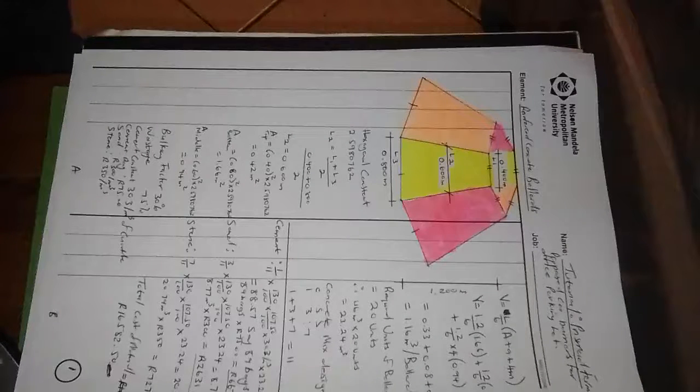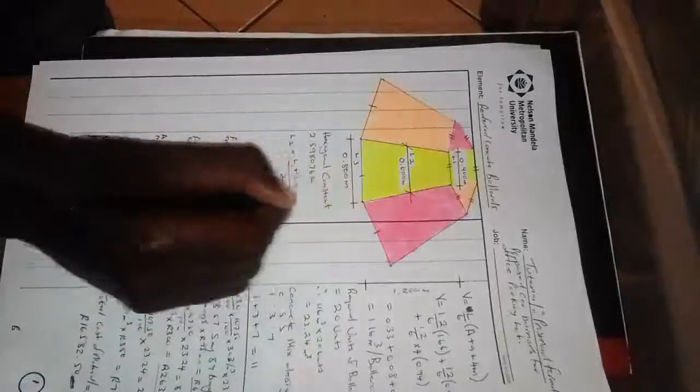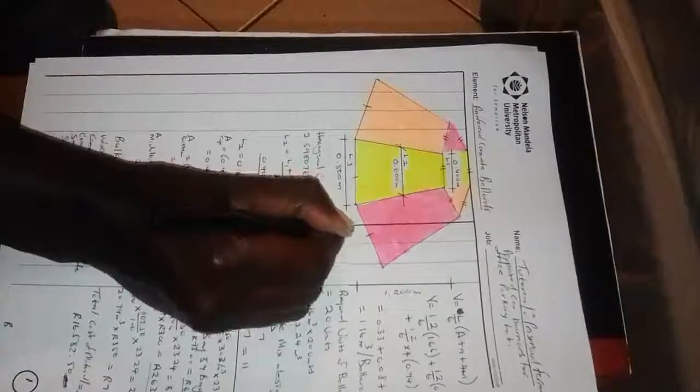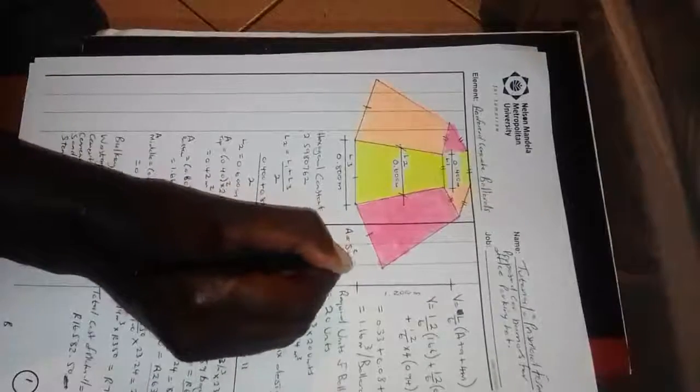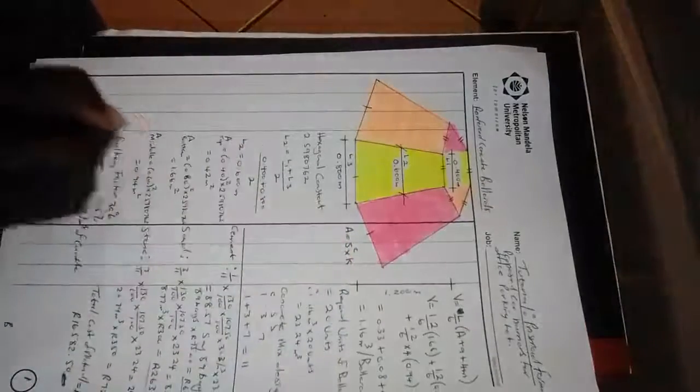This is what we do guys. We've been given a constant for the hexagon to calculate area. The formula for calculating with a constant goes as follows: Area is equal to side squared times constant.